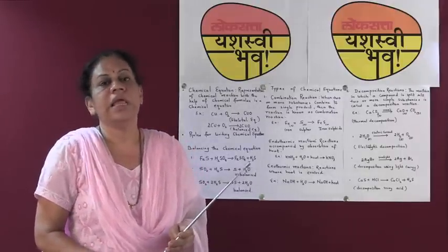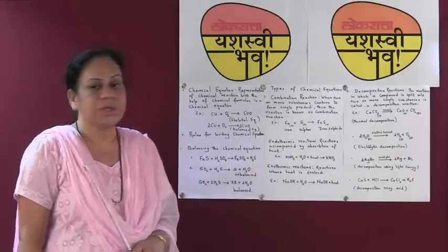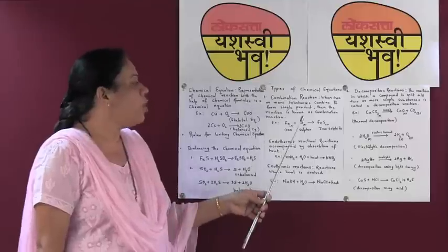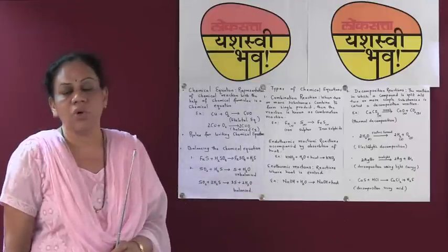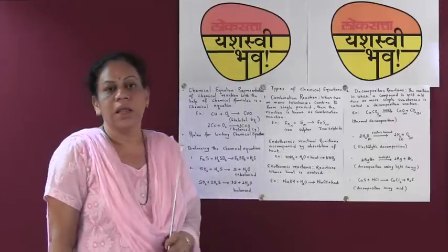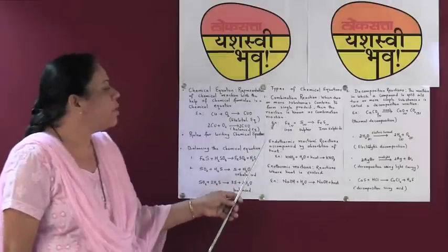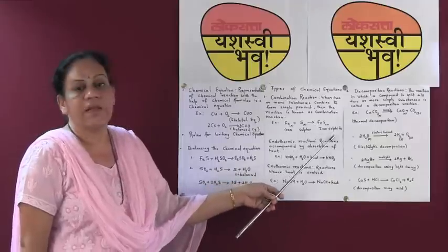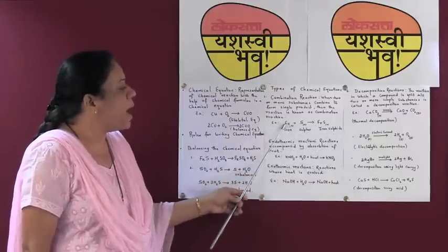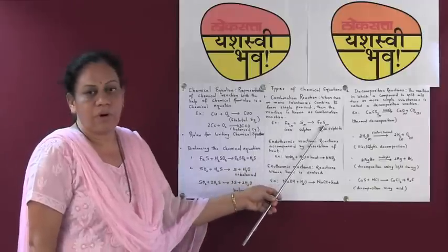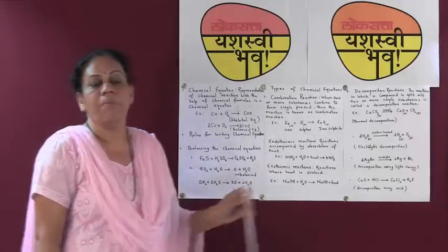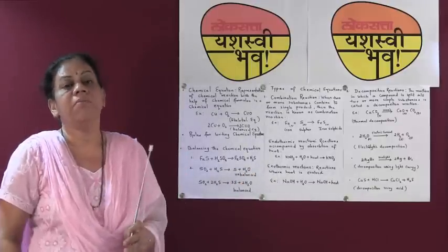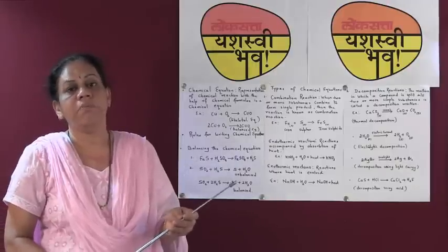Let us study in detail about the combination type of reaction. When two or more substances combine to form a single product, the reaction is known as a combination reaction. For example, iron reacts with sulphur to give iron sulphide — two substances combine to give one product.